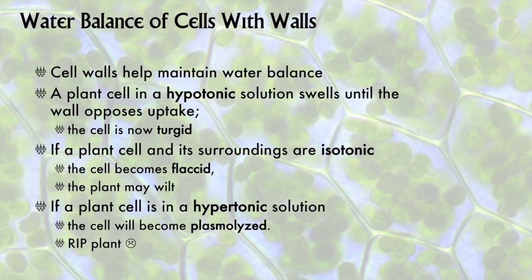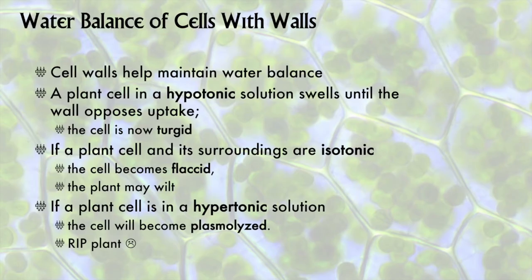Life is different with a cell wall. Having a rigid cell wall means a plant has some assistance maintaining water balance. Plants do better when they have plenty of water. Plant cells in hypotonic solution will absorb water and become turgid or firm, which is how plants like to be. In an isotonic solution, plant cells don't perform as well and the cells become limp or flaccid, and wilting occurs. If plant cells are exposed to a hypertonic solution, the cells will lose water, and when that happens, the cell membrane will tear away from the cell wall — becoming plasmolyzed — and that tissue, or indeed the entire plant, may die.